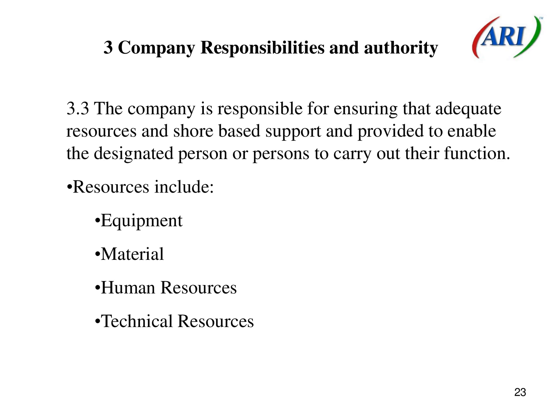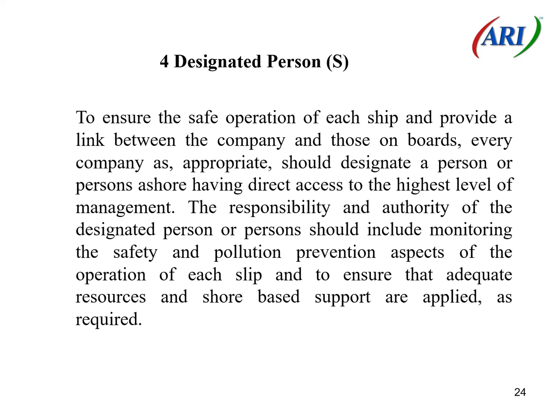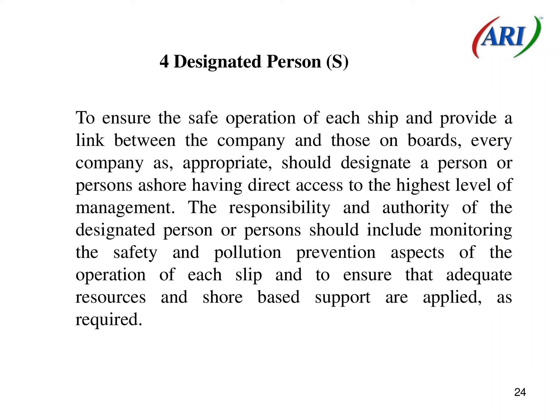3.3 The company is responsible for ensuring that adequate resources and shore-based support are provided to enable the designated person or persons to carry out their functions. Resources include equipment, material, human resources, and technical resources. Every company, as appropriate, should designate a person or persons ashore having direct access to the highest level of management. The responsibility and authority of the designated person or persons should include monitoring the safety and pollution prevention aspects of the operation of each ship and to ensure that adequate resources and shore-based support are applied as required.